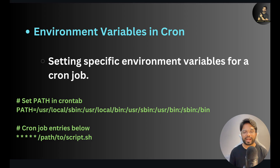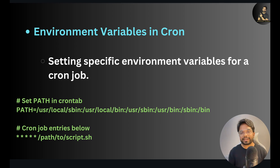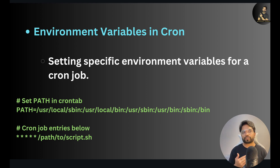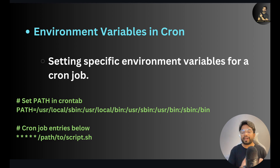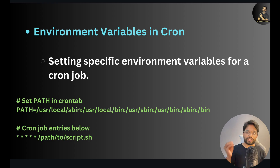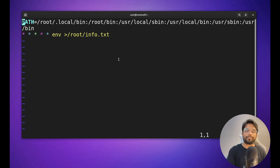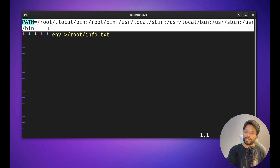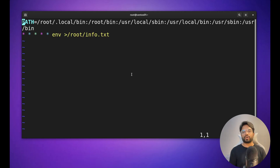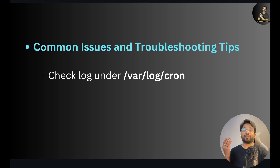You can also set environment variables directly in your crontab file. This is important because cron runs in a minimal shell environment, so some environment variables your script depends on may not be available by default. In your crontab file, define the PATH or other variables at the top — for example, `PATH=/usr/local/sbin:/usr/local/bin:/sbin:/bin` — and then list your scheduled jobs below.